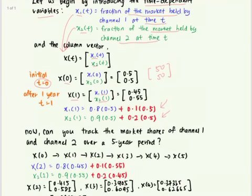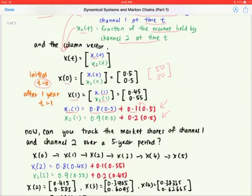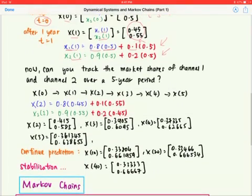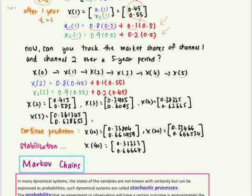The market share of channel 1 after year 1 is calculated as 0.8 × 0.5 (80% remaining loyal) plus 0.1 × 0.5 (10% captured from channel 2), and similarly for channel 2, giving 0.45 and 0.55. You can then track the market shares of both channels over a 5-year period using the same equations, computing the state for year 1, year 2, year 3, year 4, and year 5.